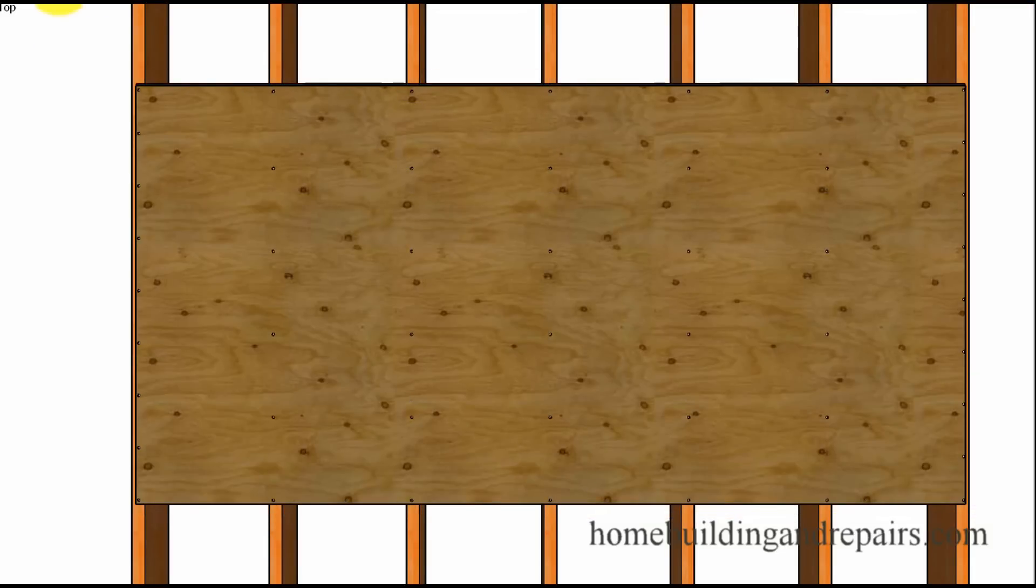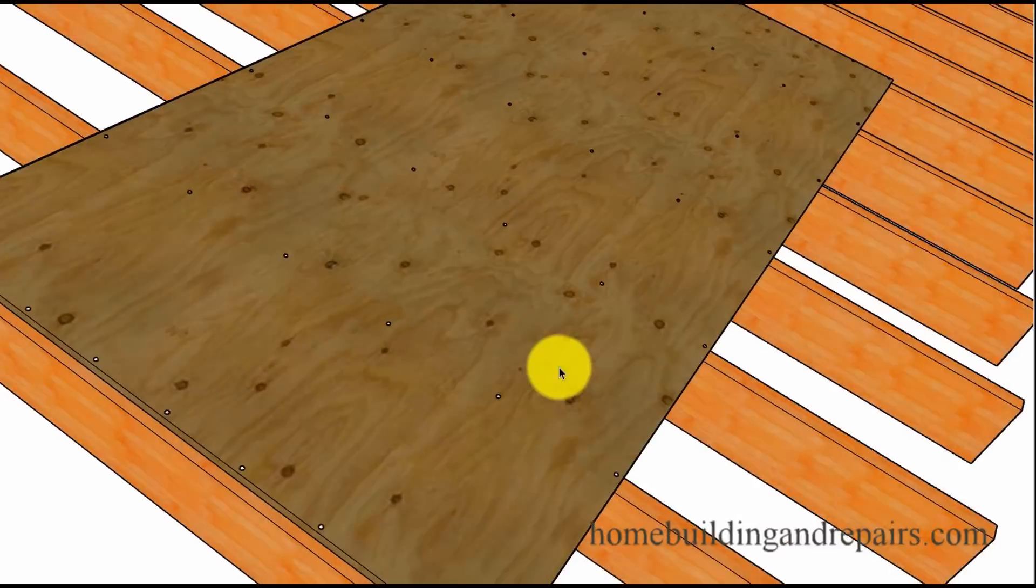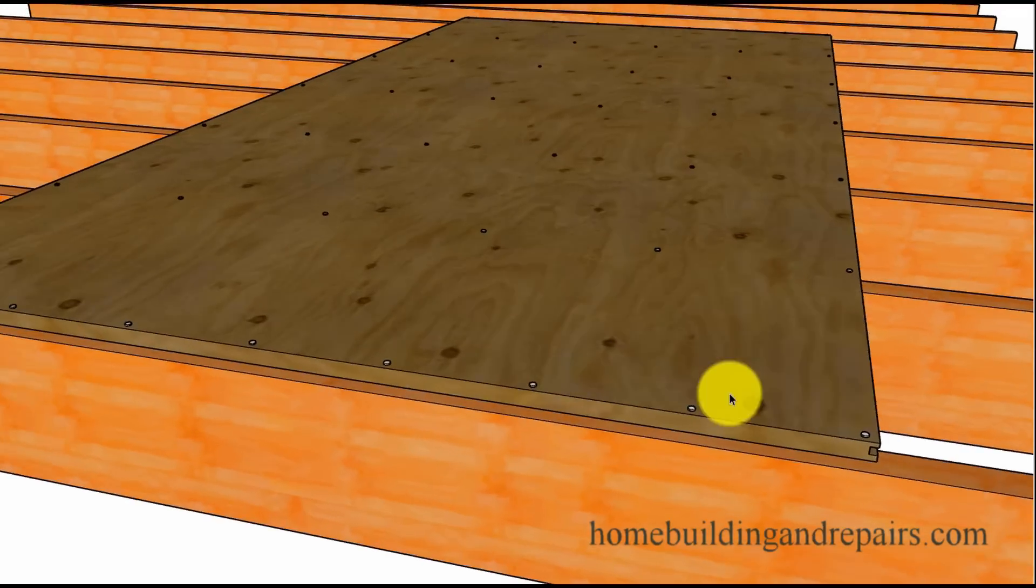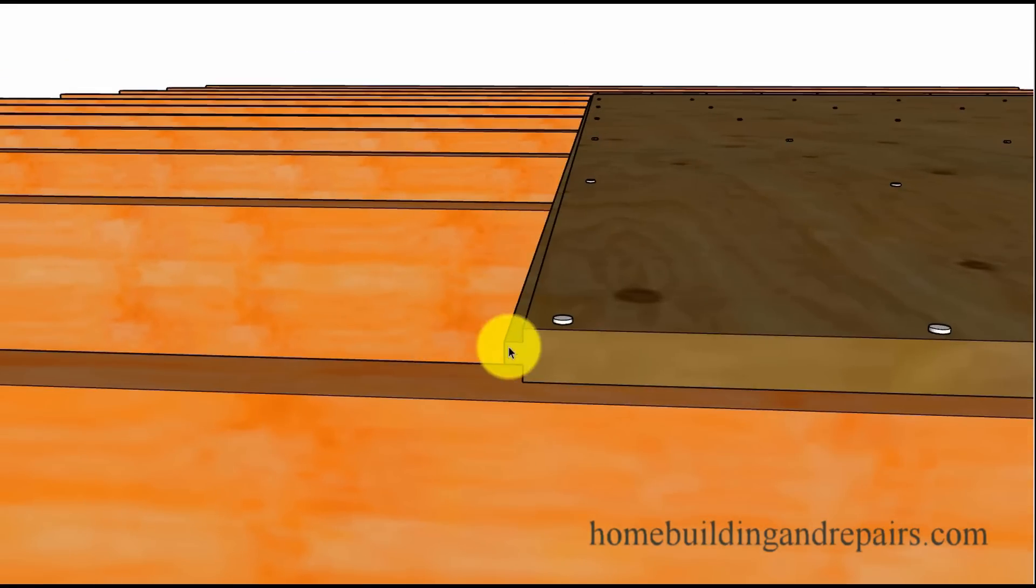Now if we have tongue and groove plywood, we won't be going around the perimeter of the length here. The tongue and groove will provide the support that we would need in between the joists, so we wouldn't need the blocks. You would have six inches on center around the edges, and then one nail into every joist.